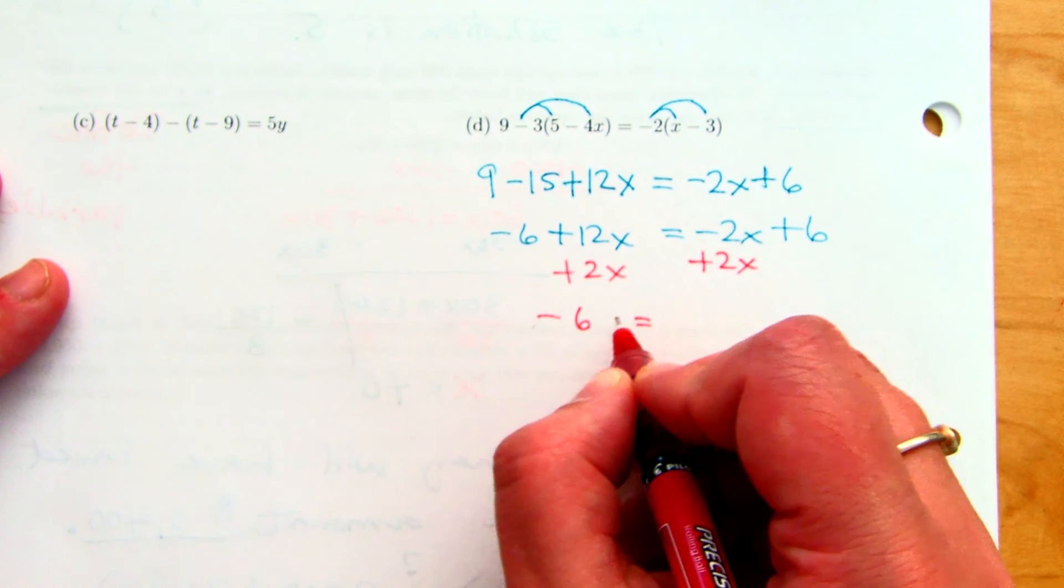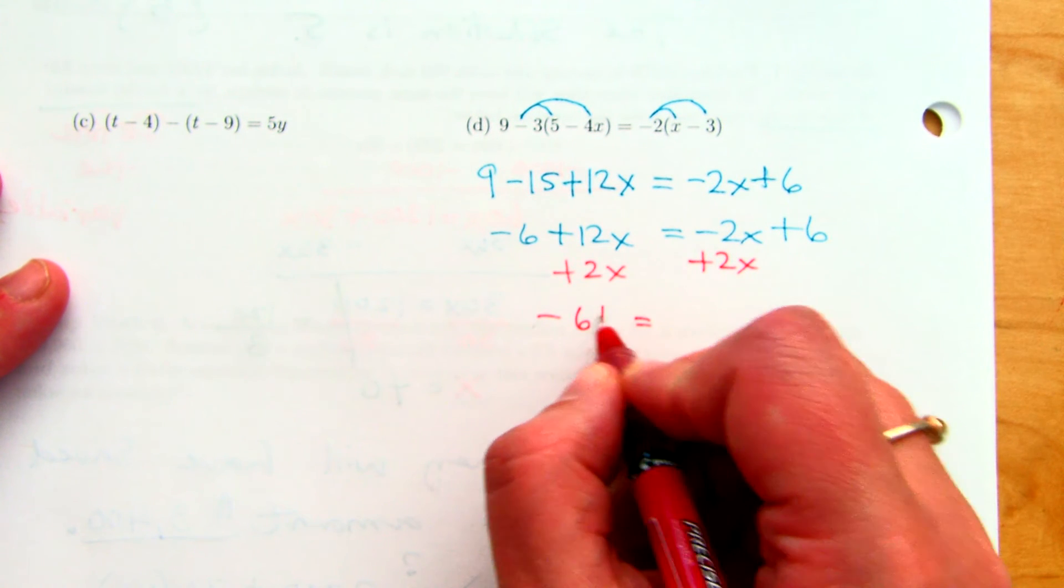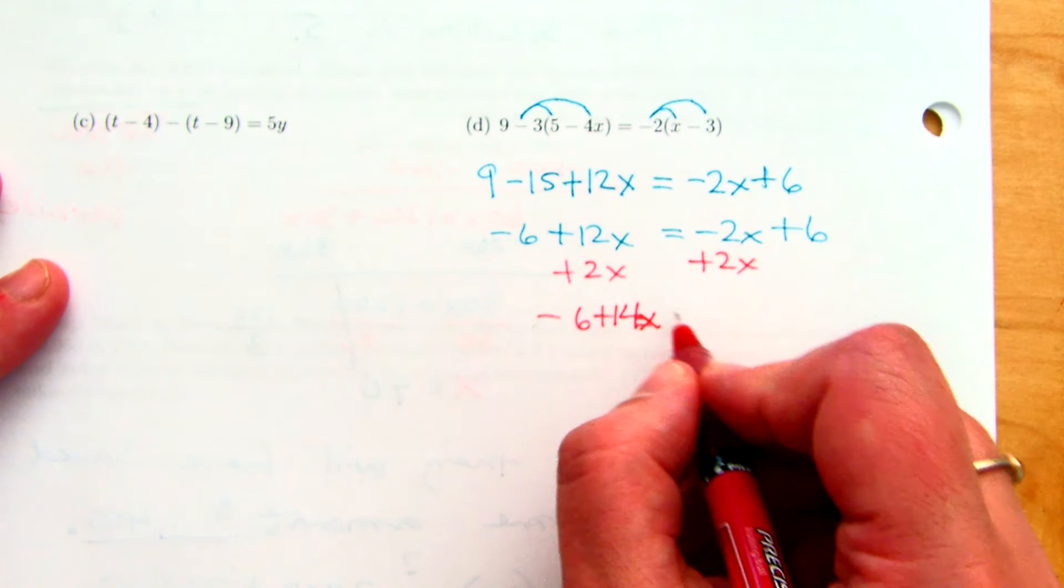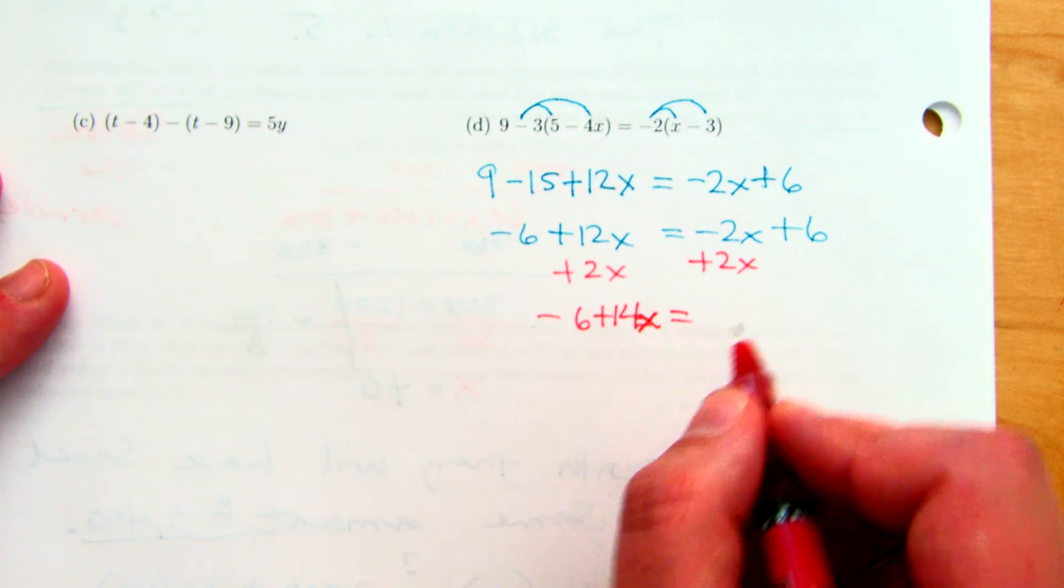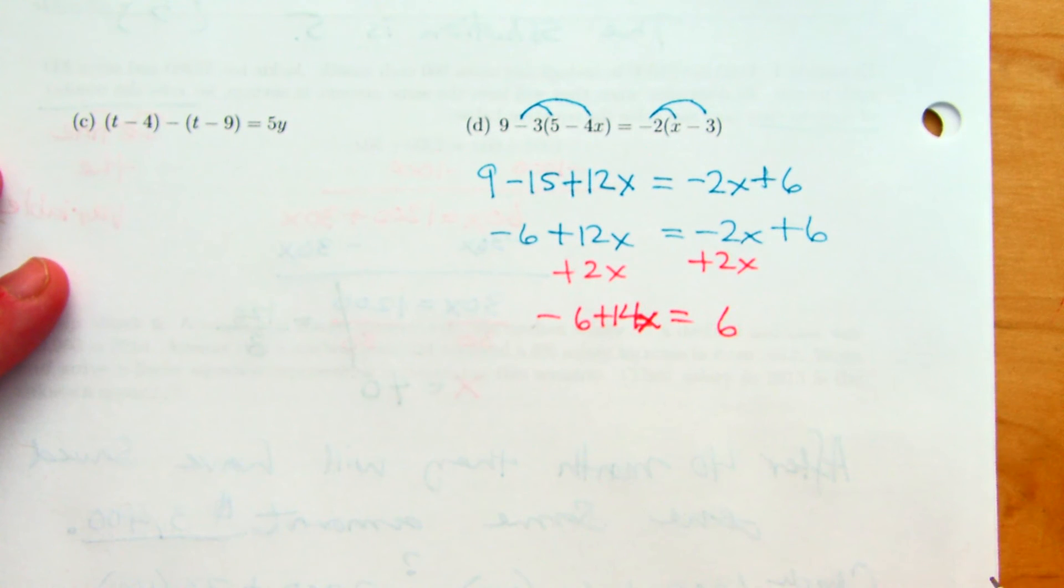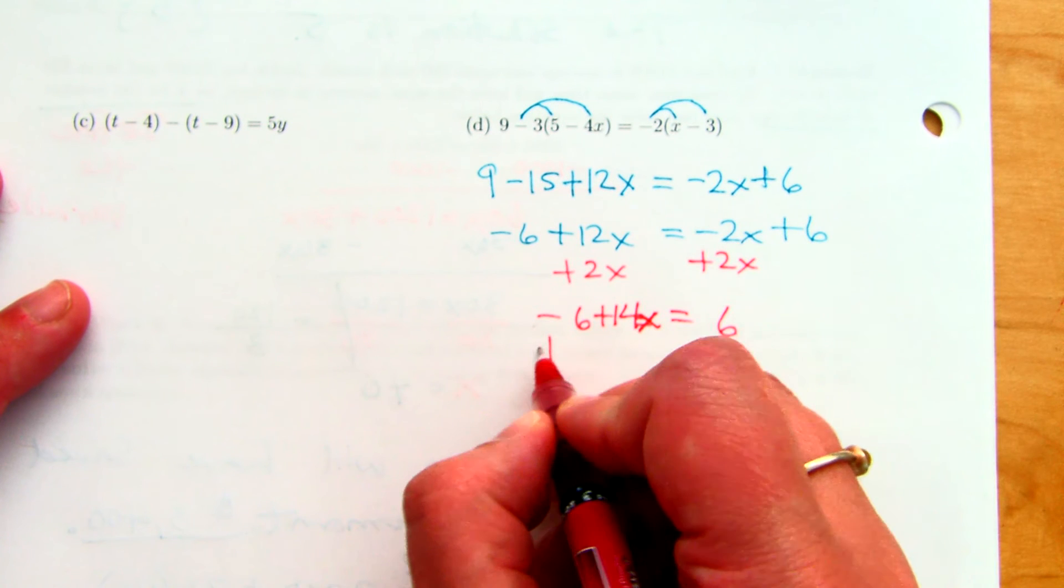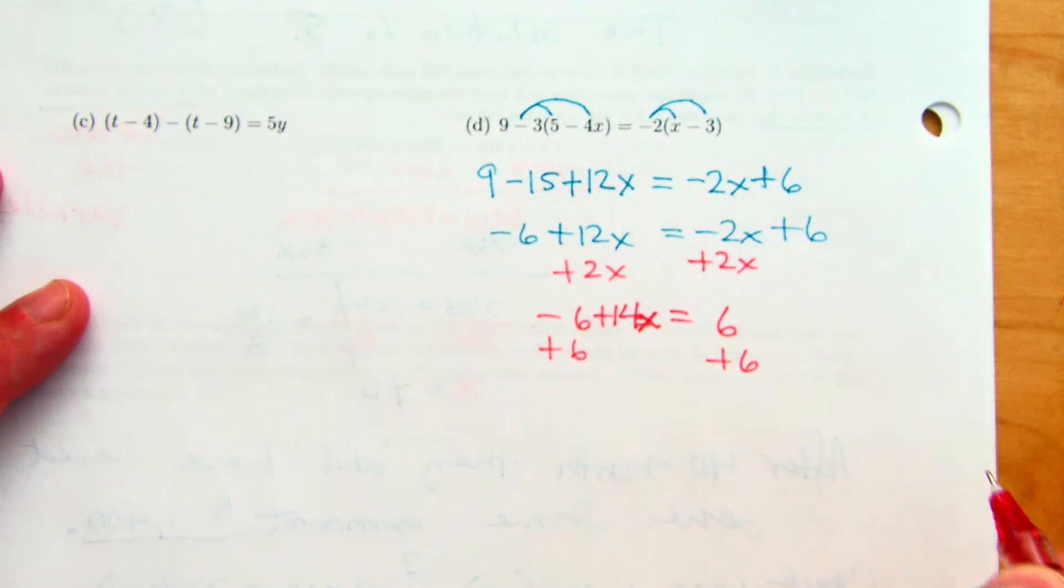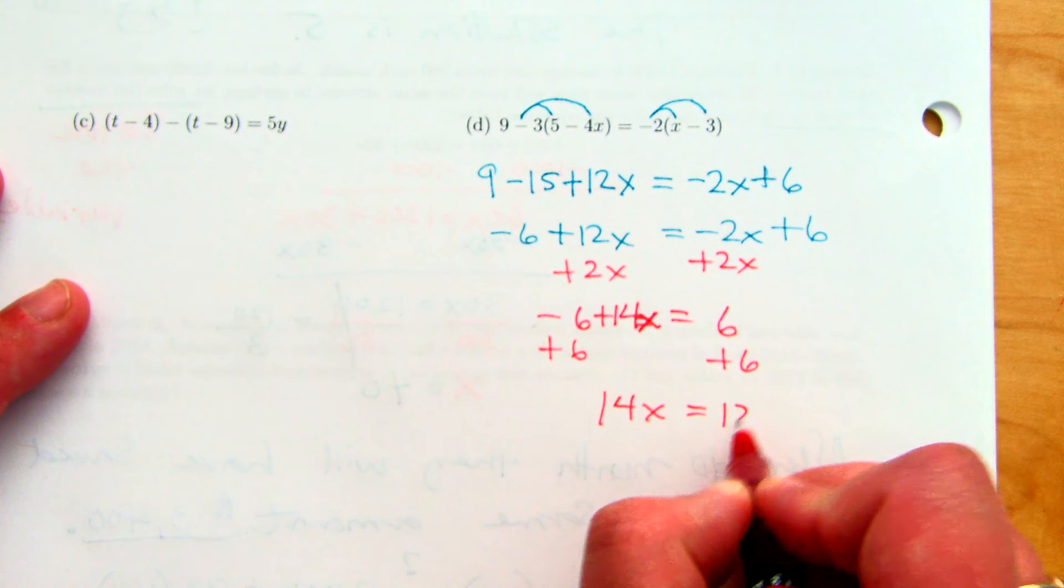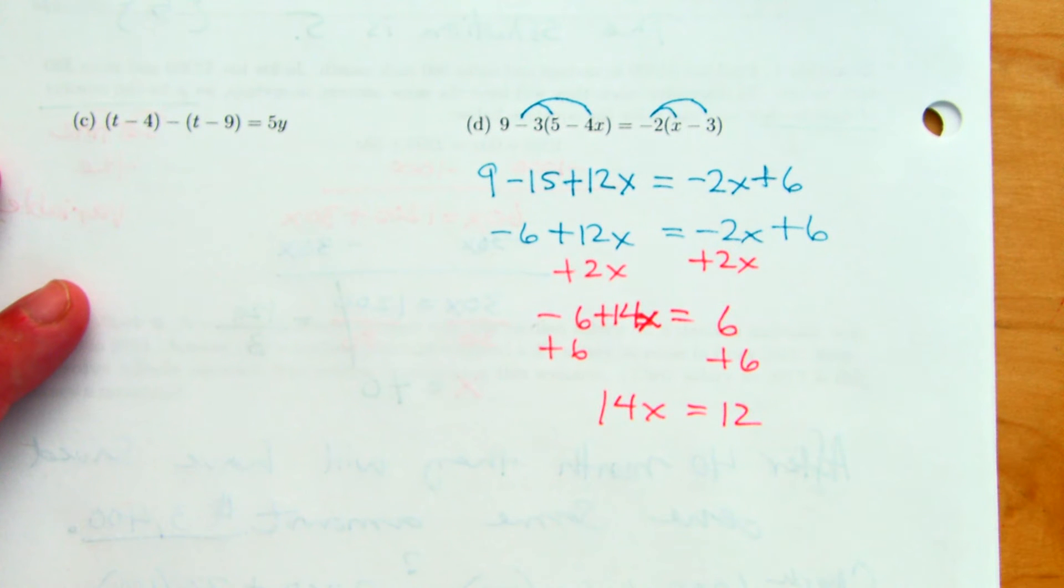Add 2x. Add 2x to both sides. Because I want to undo the negative. Negative 6 equals. Oops. What did I forget? See? I can make mistakes too. Plus 14x. Lining up our equal sign. No equals in front. Just equals in the middle. And then what's left over here is 6. Now what? Yeah. So I have to add 6 to both sides. 14x equals 12.